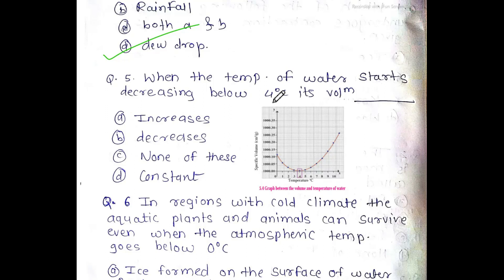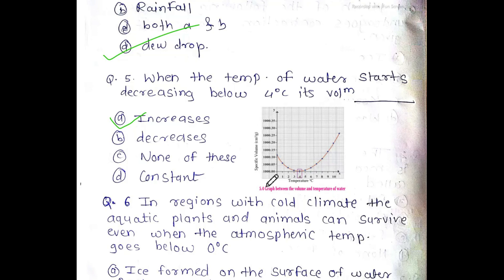Next MCQ: when the temperature of water starts decreasing below 4 degrees Celsius, its volume — what happens? Option A says it increases. We have a graph in the textbook showing volume versus temperature. When the temperature goes below 4 degrees Celsius, the volume increases.